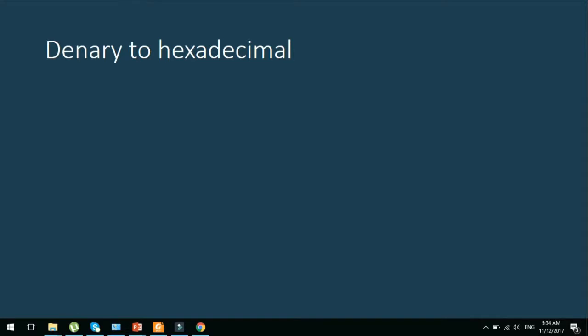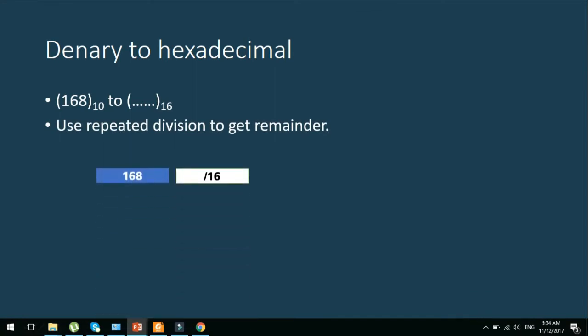Let's see how you can convert a denary number to hexadecimal. So let's say you got 168 base 10, which is denary or decimal. We need to convert it to base 16. As you see base 16, you'll need to do repeated division of 16 to get the remainder. So we start with 168 divided by 16. In this case, the closest number exactly divisible is 160. Therefore, the remainder will be 8.